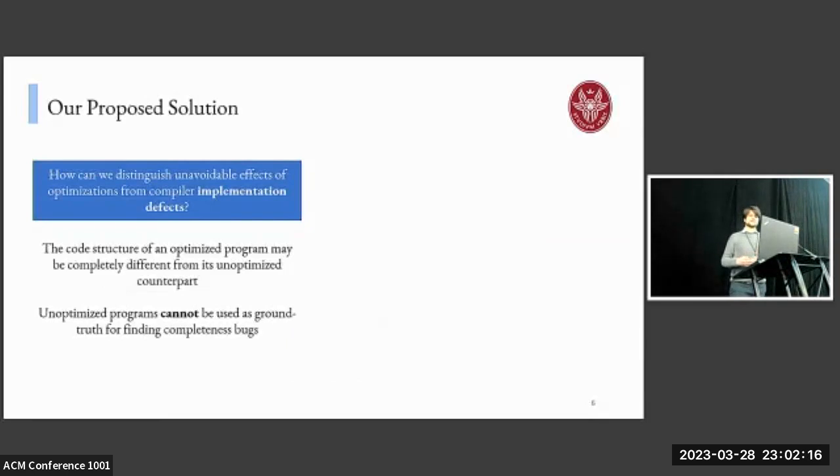Differently from the correctness problem where unoptimized instances of the program can be used as a correctness oracle, we cannot do the same because due to the optimizations highly changing the code structure, we have no guarantees about the mapping between the optimized and unoptimized version. In general, we say that unoptimized programs cannot be used as ground truth for finding completeness bugs. So our solution is designing conjectures based on the expected availability of variable values, and such conjectures can be drawn from experience in compiler construction or from practical observations.